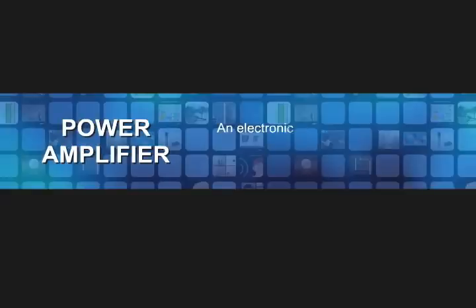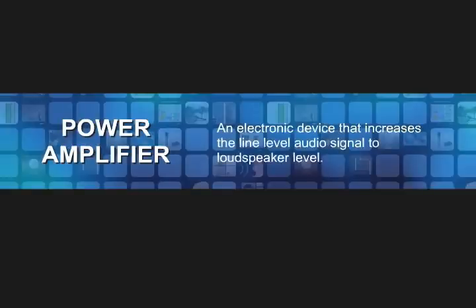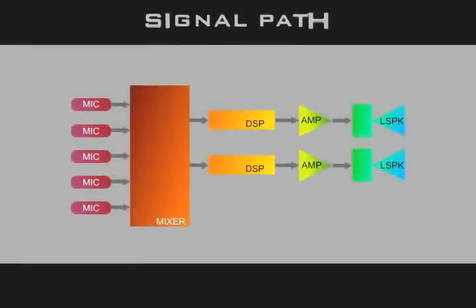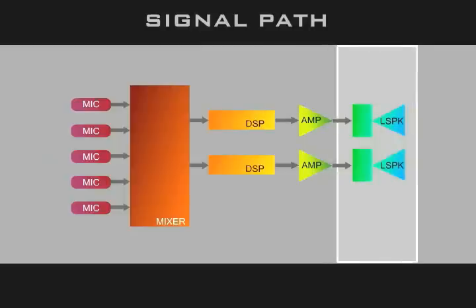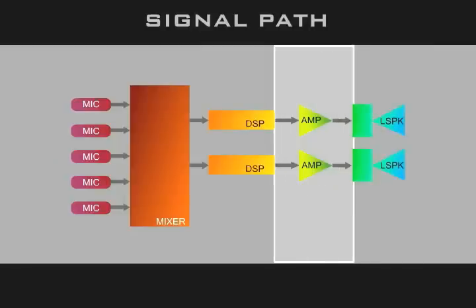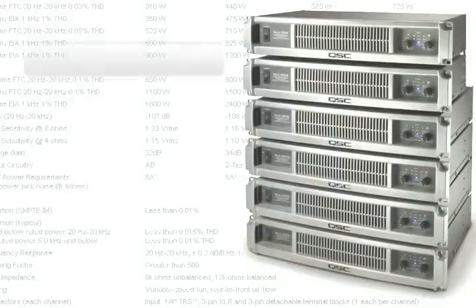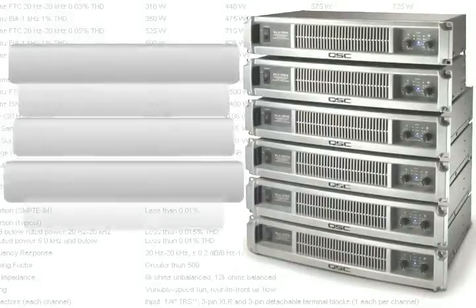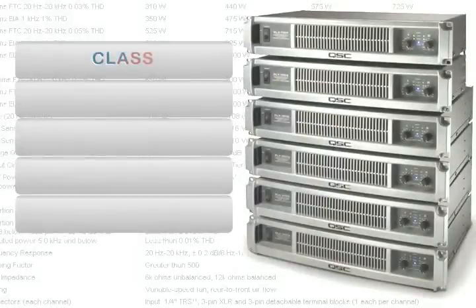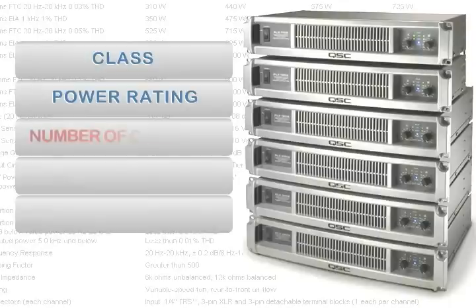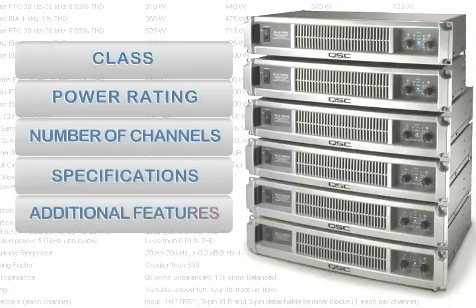A power amplifier is an electronic device that increases the line level audio signal to loudspeaker level. The power amplifier is the last processing device in the signal path prior to the loudspeaker. Power amplifiers differ by way of their class, power rating, number of channels, specifications, and any additional features incorporated into the unit's design.